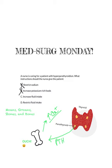Options C and D are opposites. Most of the time when questions have opposites, one of those is going to be correct — and that's true here. If I have a patient who has kidney stones, I am going to want to increase fluid intake. That's going to be the right answer. I want to increase fluid intake to help flush that calcium out of the blood.